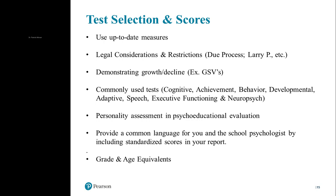Test selection and scores are important to know when working with schools. First, you want to use up-to-date measures — publishers are updating norms based on changes in demographics, and you should stay abreast of changing times. If you're giving an achievement test, don't use a version that's 15 years old when there's a new one out, because that can later get challenged and thrown out. Know your legal considerations and restrictions, which vary by state. There are due process protections built in to ensure students are covered.